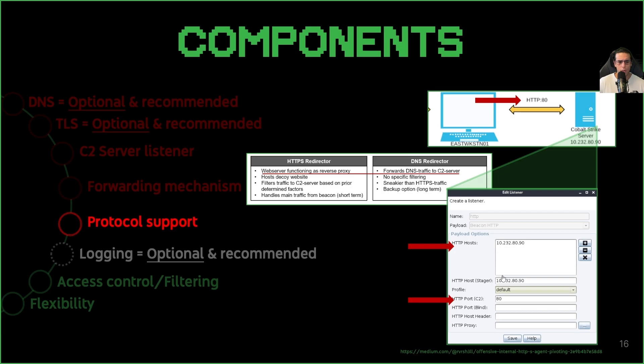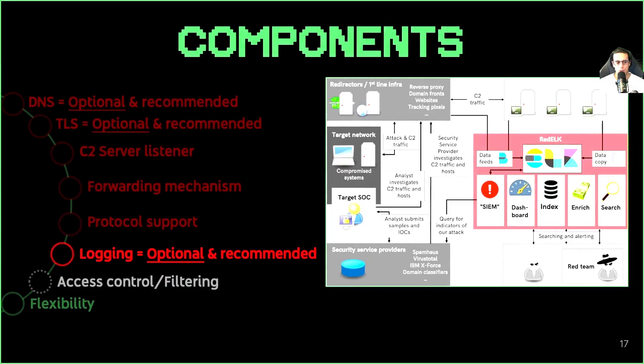The C2 server must have a listener configured to transmit messages in the desired protocol. What we're seeing on the right-hand side of the slide are some of the considerations that differ across HTTPS and DNS redirector types, as well as a configuration for a listener on Cobalt Strike using port 80 for HTTP and the IP address of the listening host.